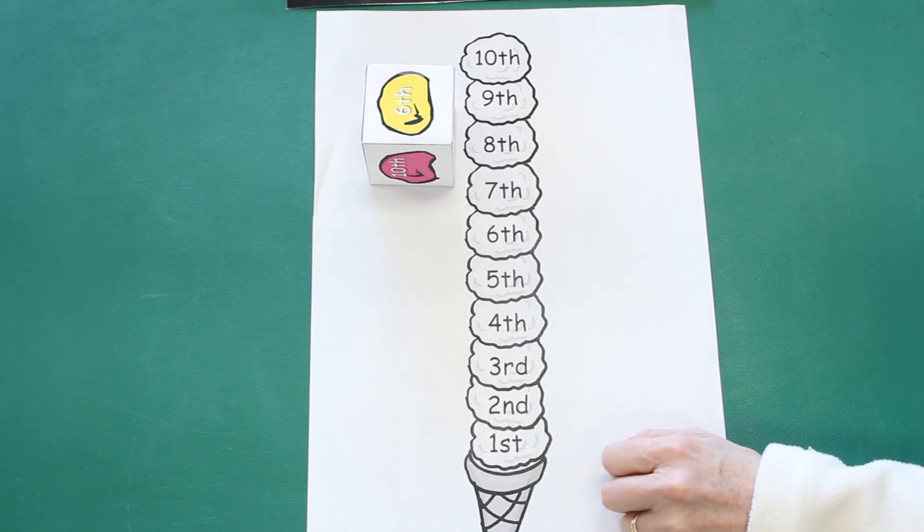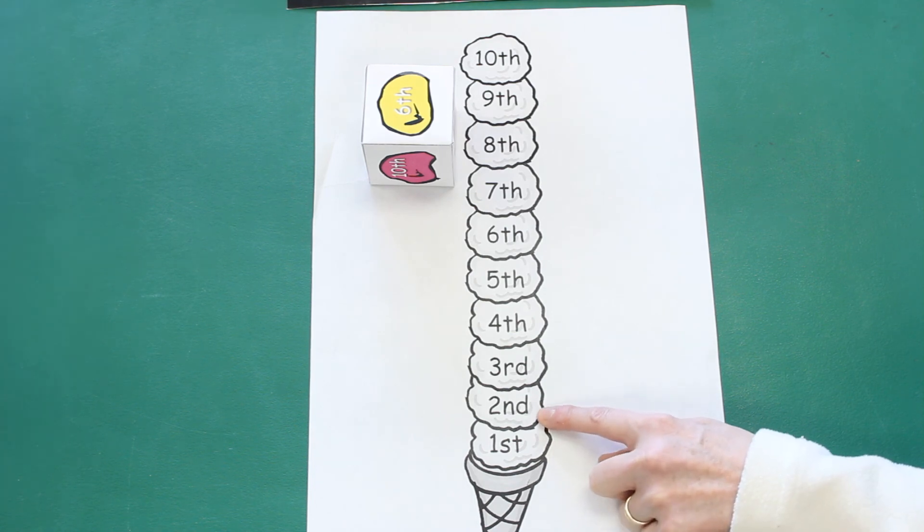Can you find the first scoop of ice cream? Yeah, there it is down at the bottom. Where's the second scoop? The second scoop is next.